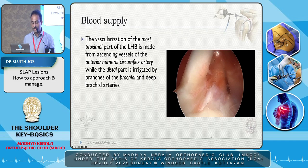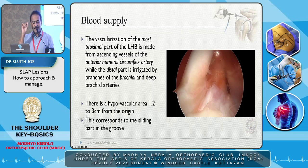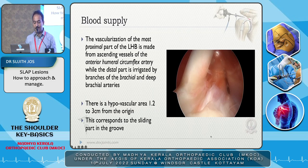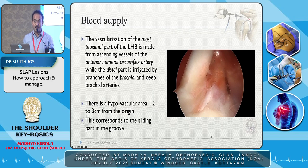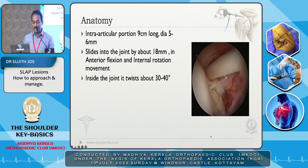The vascularization of the most proximal part of the long head of biceps comes from the ascending vessels of the anterior humeral circumflex artery, and the distal part from branches of the brachial and deep brachial arteries. There is a hypovascular area where the pulley is — about 1.2 to 3 cm from the origin — where the tendon changes direction. If that area is involved in biceps tendonitis, it will never heal. Healing is very minimal, so you may have to address it separately.